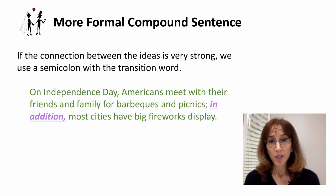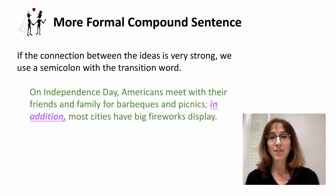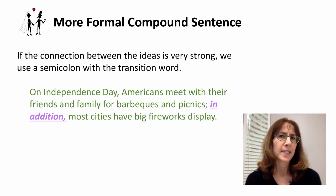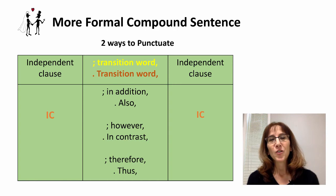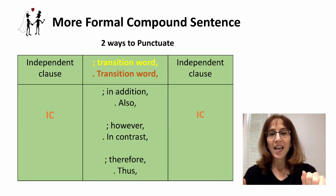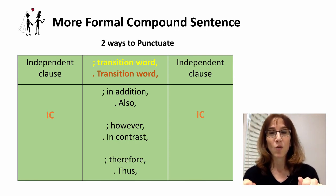If the connection between the ideas is really strong, we can use a semicolon with the transition word. For example: 'On Independence Day, Americans meet with their friends and family for barbecues and picnics; in addition, most cities have big fireworks displays.' The ideas are very closely connected, so we can use a semicolon to indicate it's not quite a full stop but it's close. So the two ways to punctuate are: period + transition word + comma, or semicolon + transition word + comma for strongly related ideas.